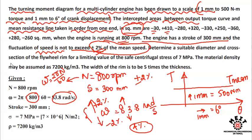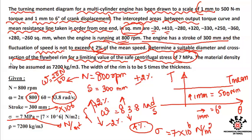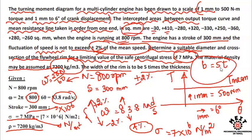We need to determine the suitable diameter and cross-section of the flywheel rim for a limiting value of safe centrifugal stress sigma equal to 7 megapascals, which is 7×10⁶ Newton per meter squared. The material density is assumed to be 7200 kg per meter cubed. The width of the rim is to be five times the thickness, so b equals 5t.